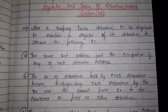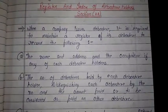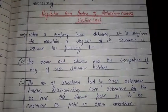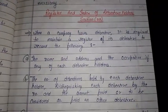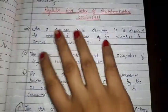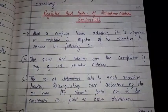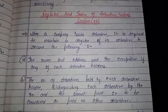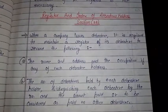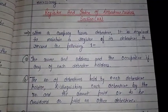When a company issues a debenture, what do you need to do? It is required to maintain a register of its debentures to record the following details. Whatever debenture has been issued, you need to write the details.